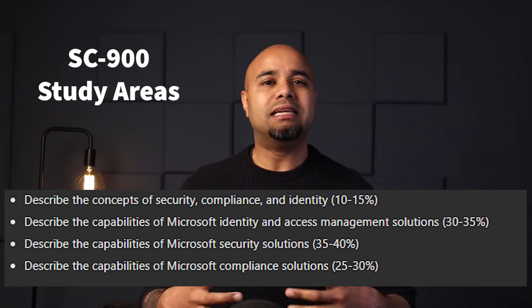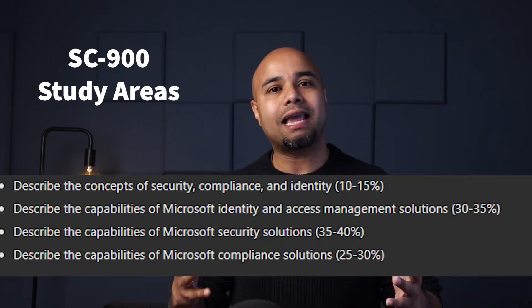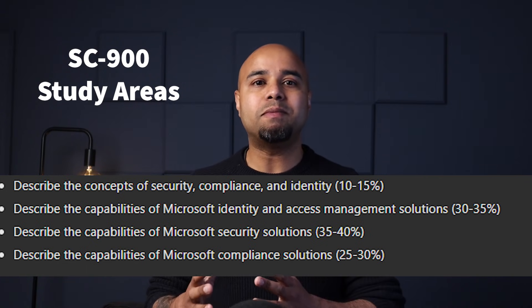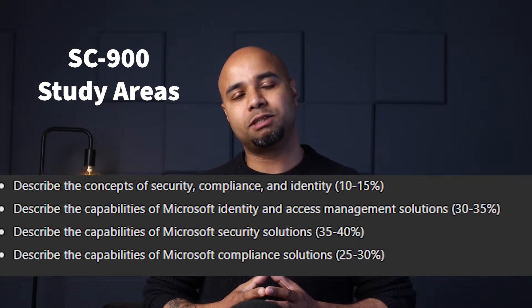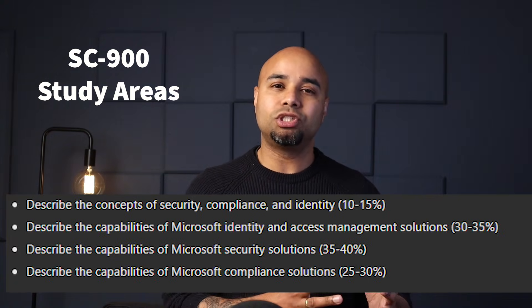Now let us explore the study areas for this exam. This exam includes four study areas. The first one is all around describing the concepts of security, compliance, and identity. This is where you will learn about the shared security model, what is IaaS, PaaS, and SaaS, who manages what, and things like that. The second module is all around describing the capabilities of Microsoft identity and access management solutions. This is where you will dive deep into understanding Microsoft Azure Active Directory capabilities and features.